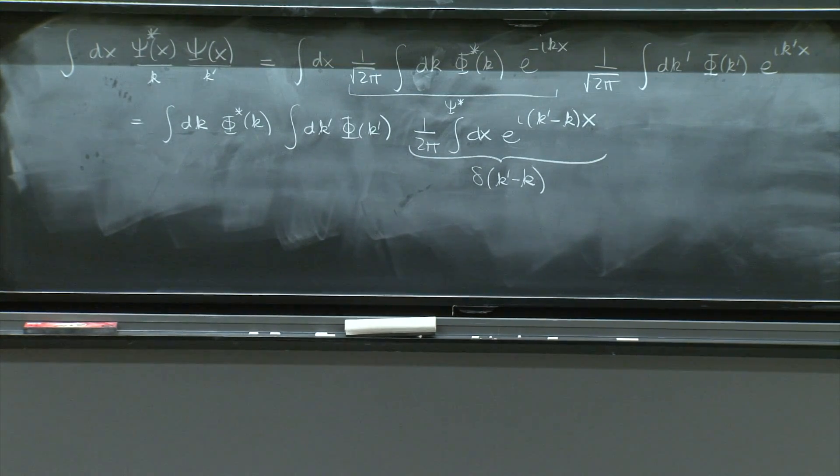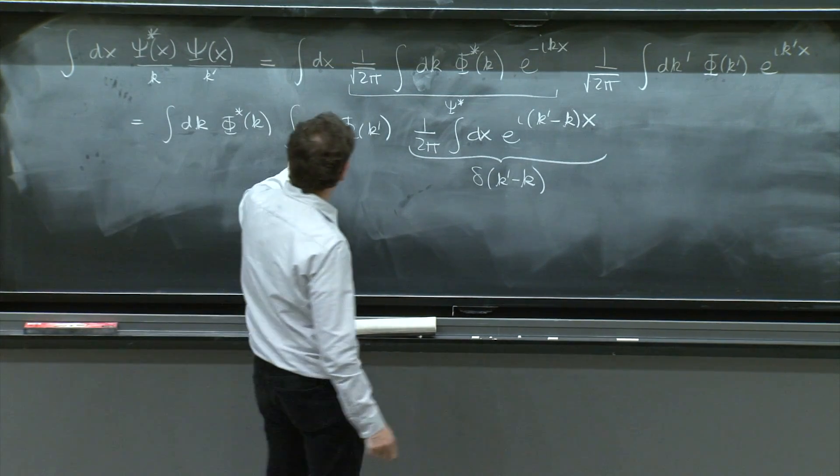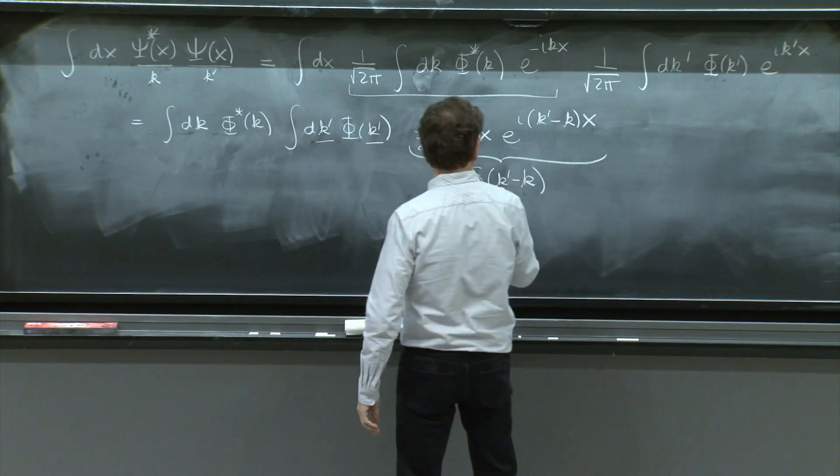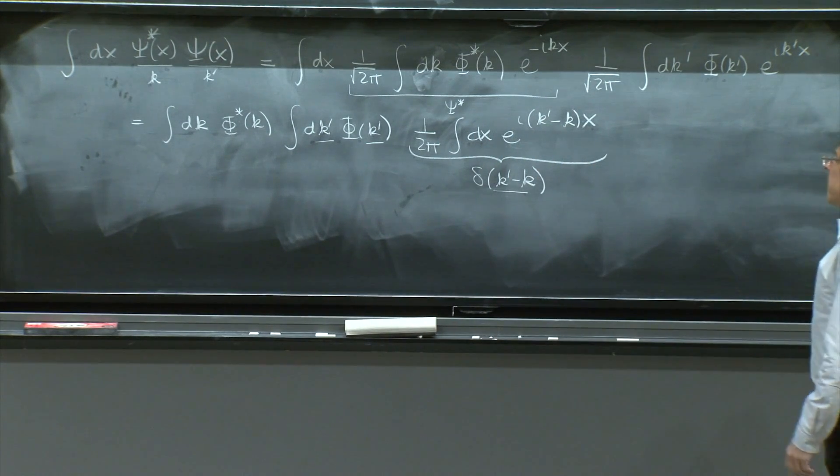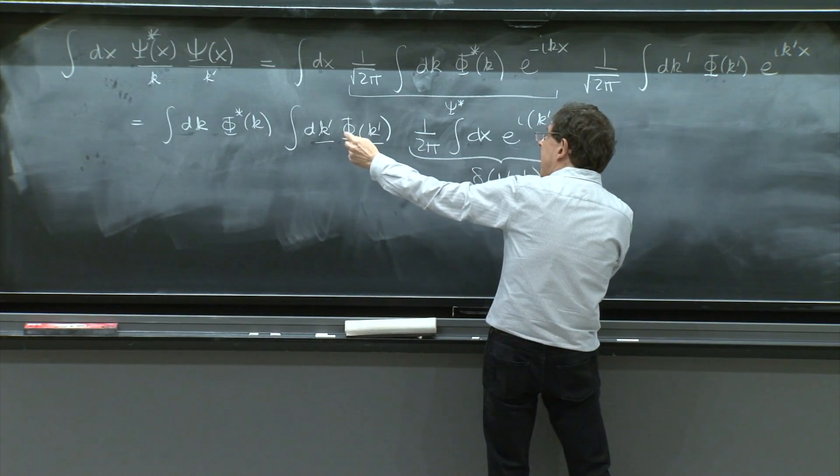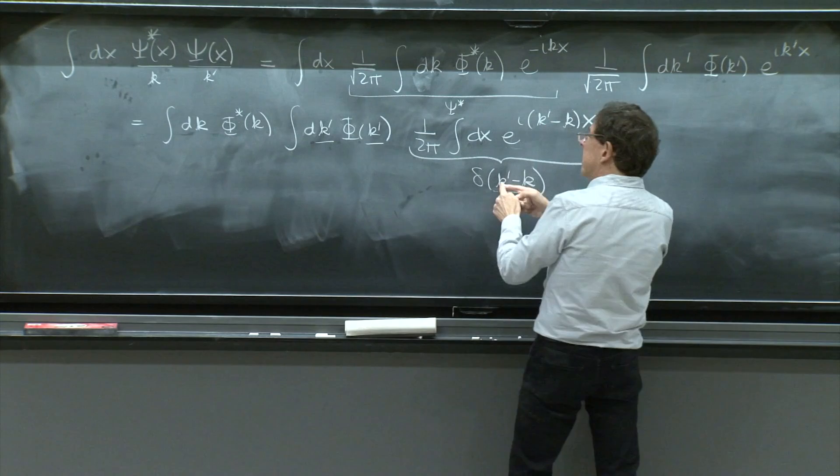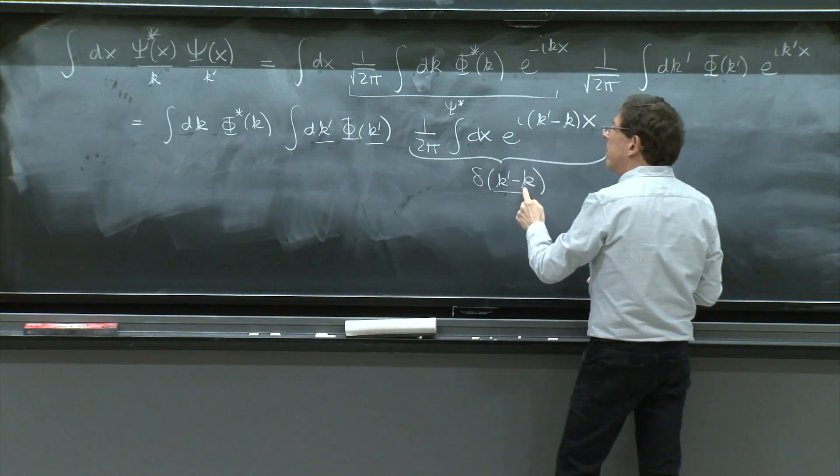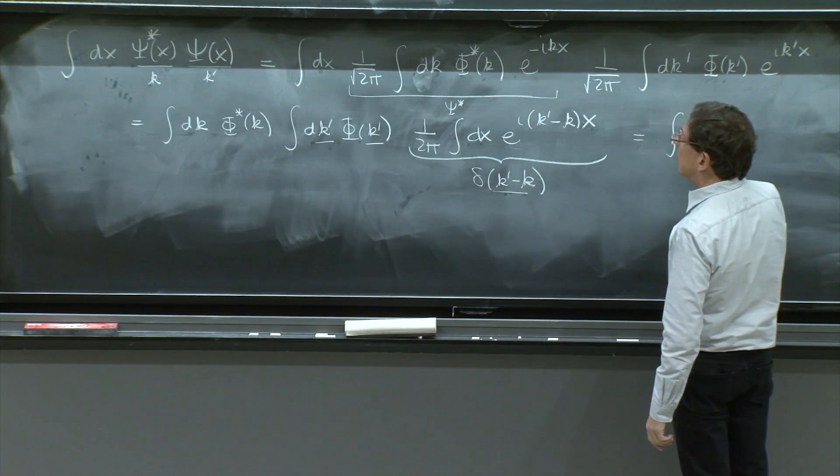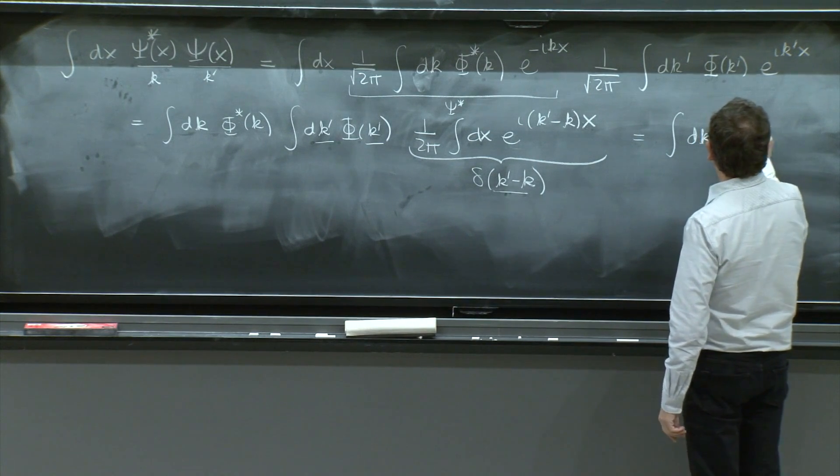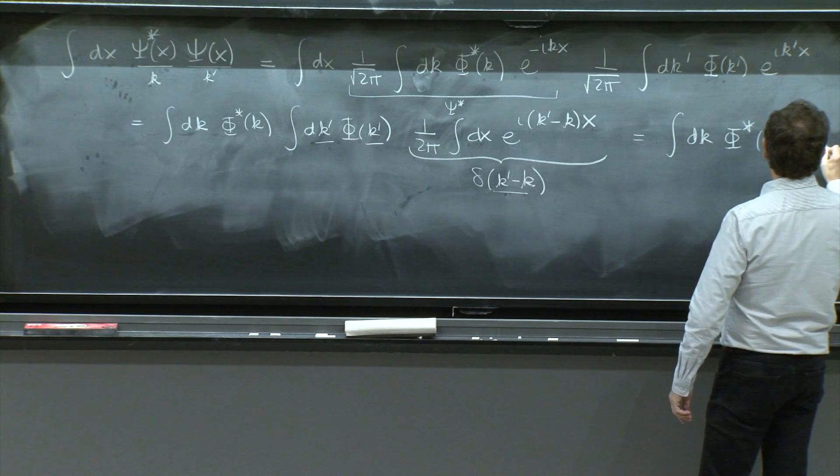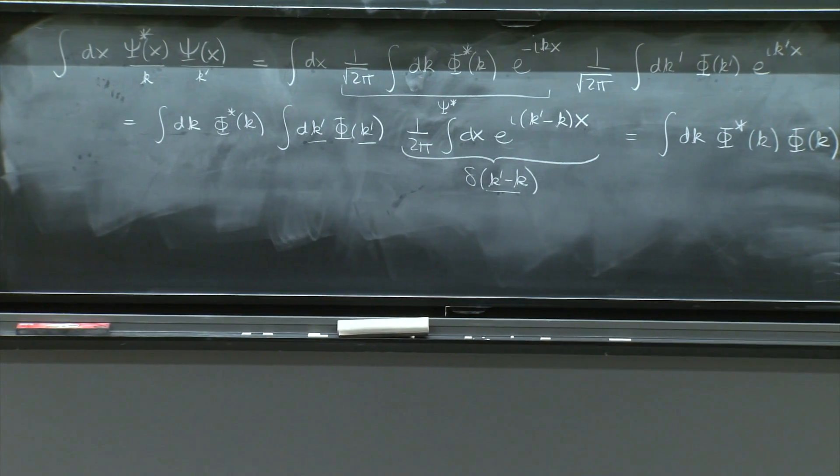And finally, I can do the last integral. I can do the integral, say, over k prime. And that will just give me, because a delta function, that's what it does. It evaluates the integrand at the value. So you integrate over k prime, evaluates phi at k. So this is equal to integral dk phi star of k phi of k. And that's pretty neat. Look what we found.